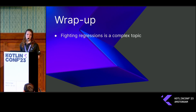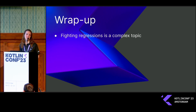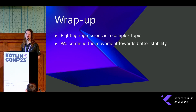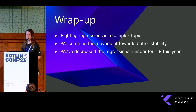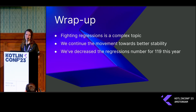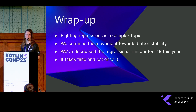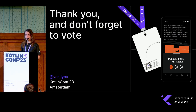To wrap it up: fighting regressions is a really complex topic, it doesn't always go smoothly, and it's not the only thing we have to improve about our quality. We are moving forward with it, especially with K2 right now. We decreased the number of regressions by 119 per year, and I hope the trend will remain encouraging. I still believe we could have no hotfixes, at least as a rule — but of course it takes time and patience. Thank you very much.